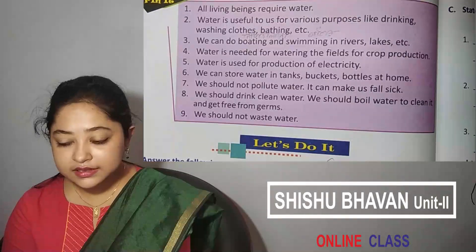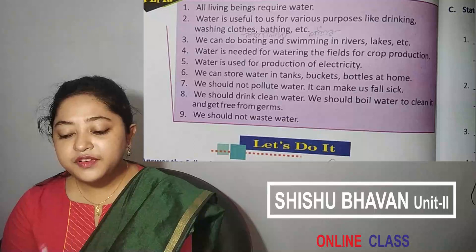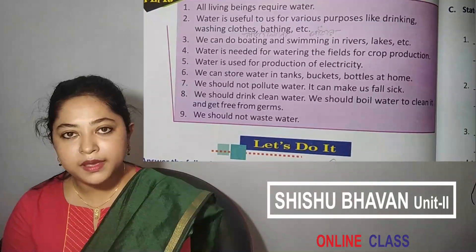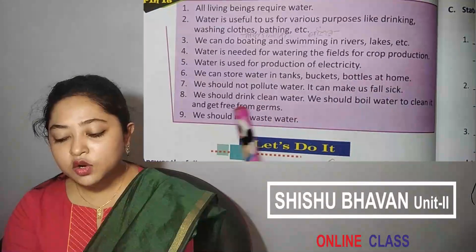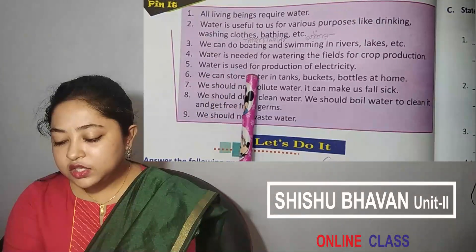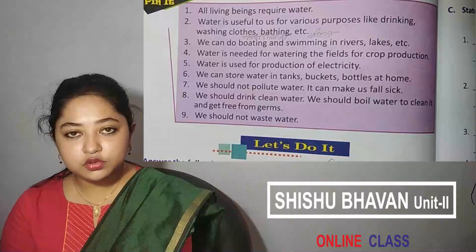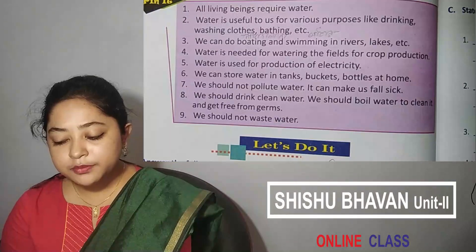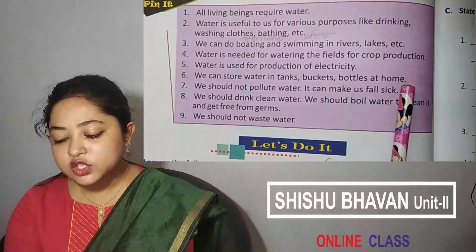Crop means crops like dhan, gum — that means production. Water is used for production of electricity.